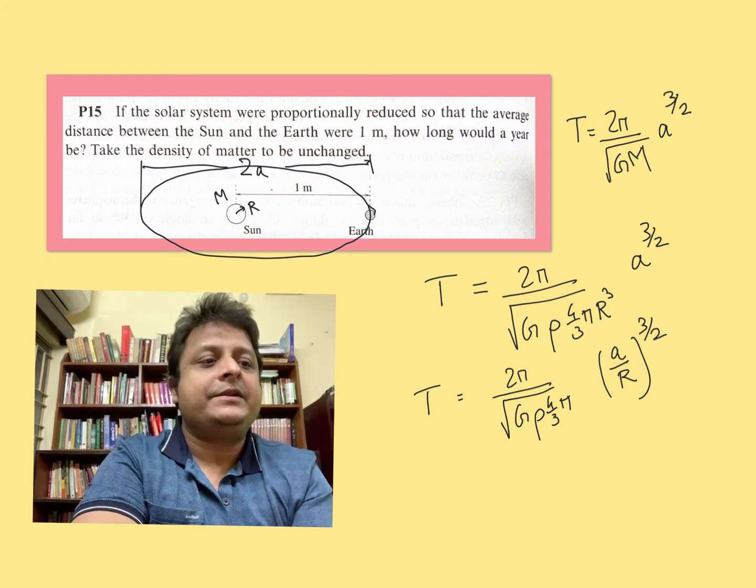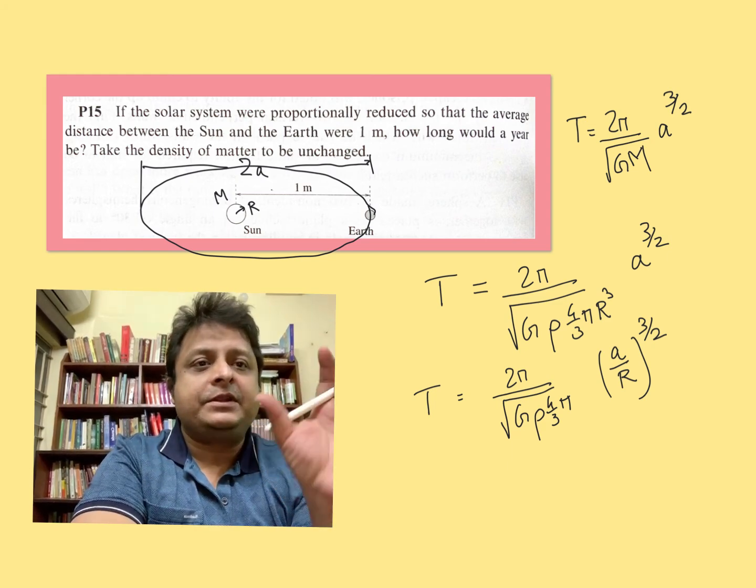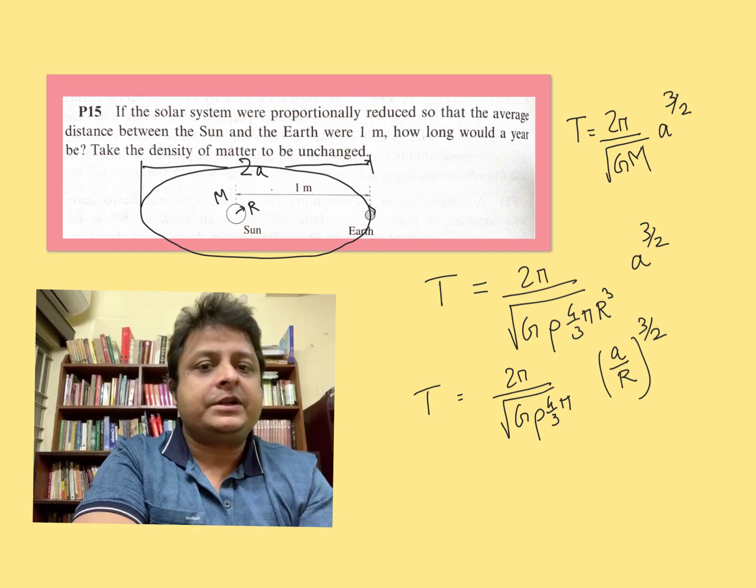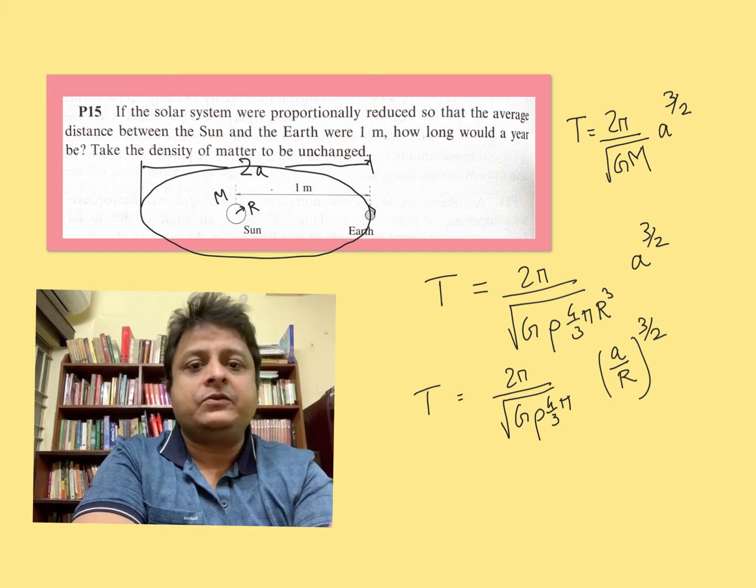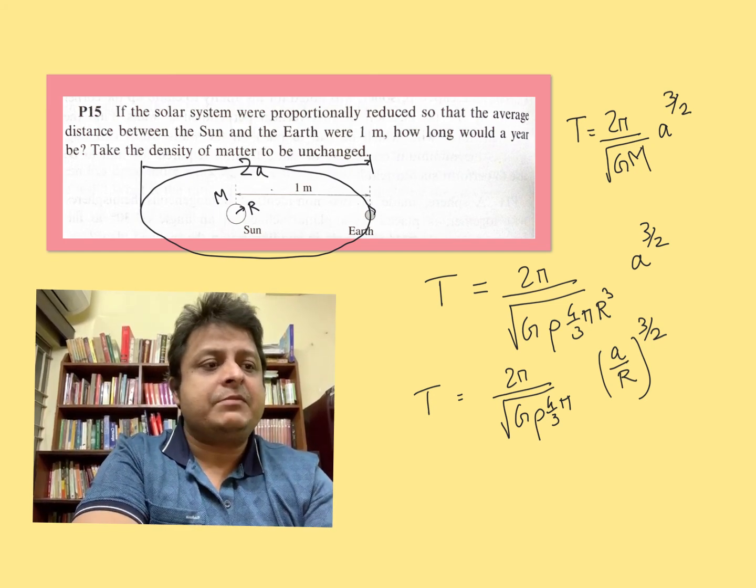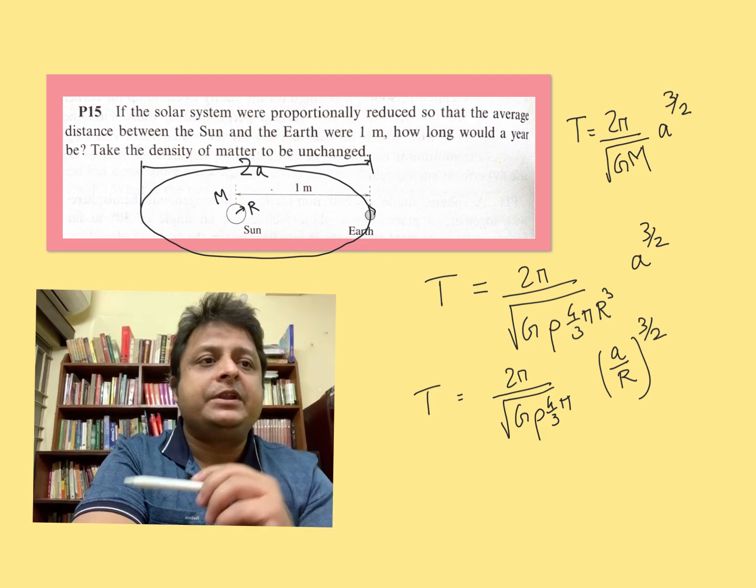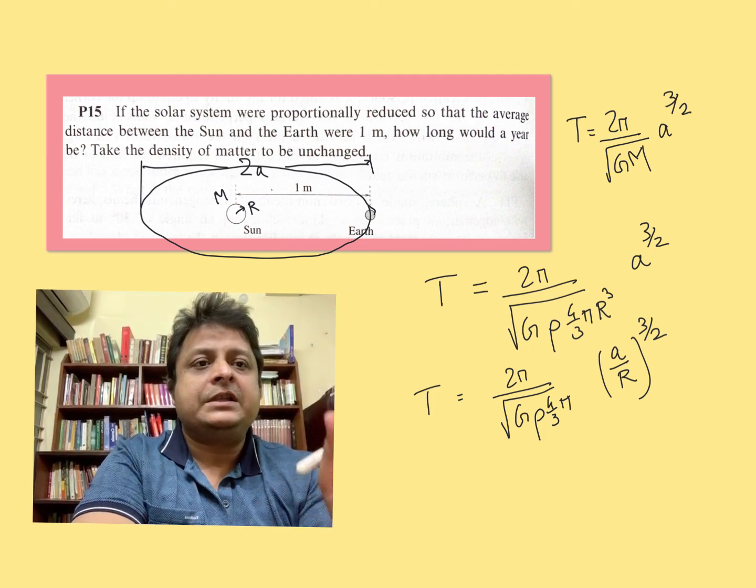Really, because if everything is reduced proportionately, then the ratio a/r has to be constant, so the time period is absolutely unchanged.